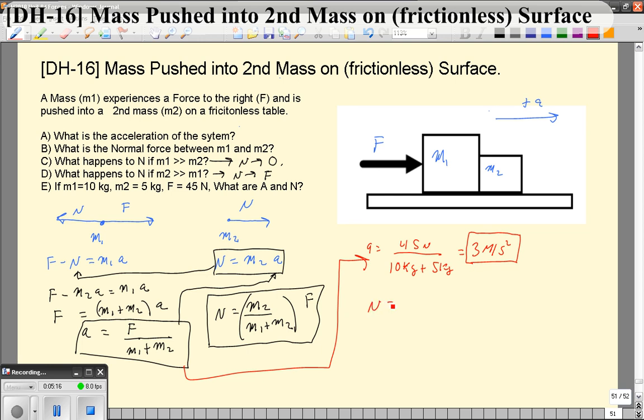And to get the normal force, the normal force is just going to be M2 times A so that is going to be 5 kilograms times 3 meters per second squared and the normal force is going to be 15 newtons. 15 newtons compared to 45 newtons is one third because 5 over 10 plus 15 is one third. It's one third of the mass of the whole system is in object 2.